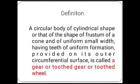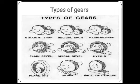The definition of a gear: it is a circular body of cylindrical shape, or in the shape of a frustum of a cone, of uniform small width, having teeth of uniform formation provided on its outer circumferential surface — this is called a gear, toothed gear, or toothed wheel. There are different types of gears.